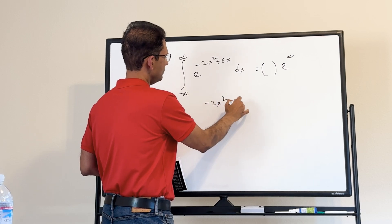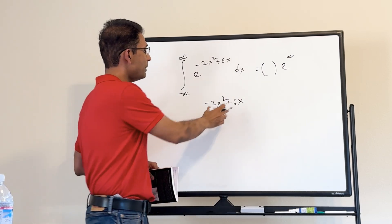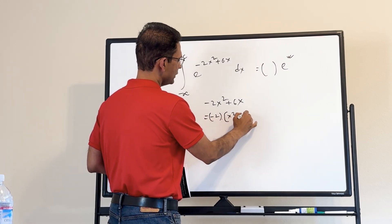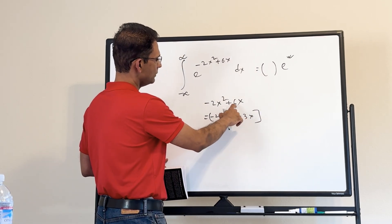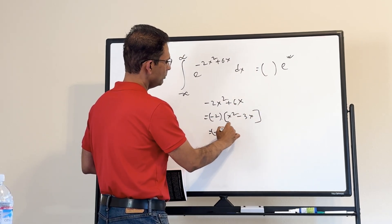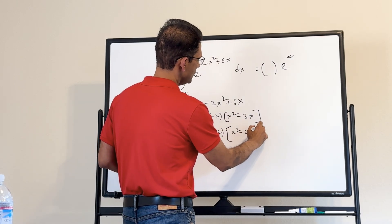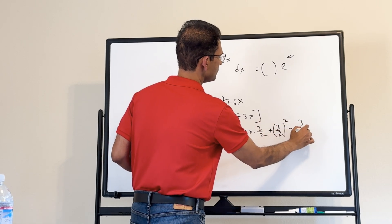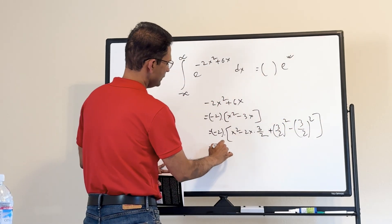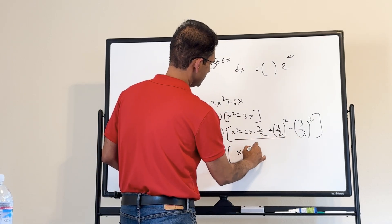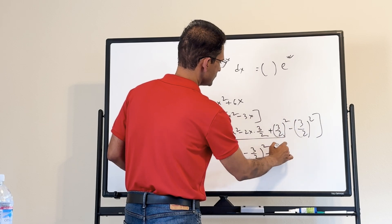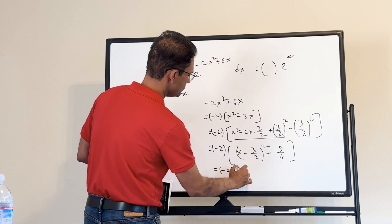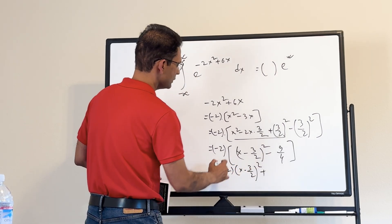We write minus 2x squared plus 6x as minus 2 times (x squared minus 3x), then complete the square: minus 2 times [(x minus 3/2) squared minus 9/4], which equals minus 2(x minus 3/2) squared plus 9/2. The maximum value of this expression is 9/2, so without doing the full integral we know the exponent in the result will be 9/2.